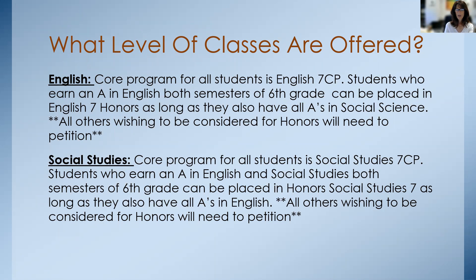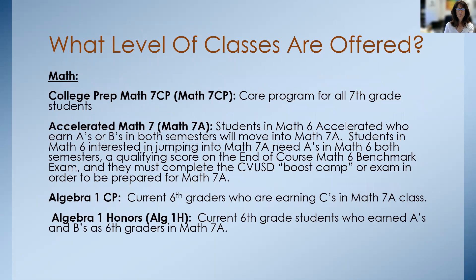For math, the core program for all seventh grade students is Math 7 CP. If students are in Math 6 Accelerated and they earn A's or B's in both semesters, then they will move into Math 7A or Math 7 Accelerated. Students in Math 6 who are interested in jumping into Math 7 Accelerated will need A's in Math 6 both semesters, a qualifying score on the end-of-course Math 6 benchmark exam, and they must complete the boost camp or the exam in order to be prepared for Math 7A.